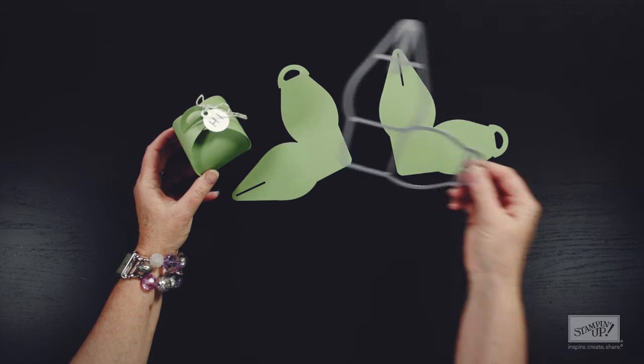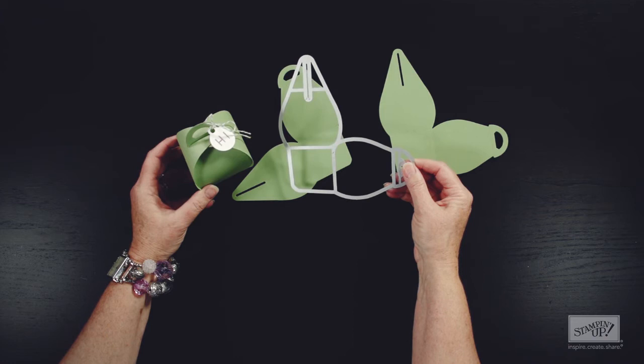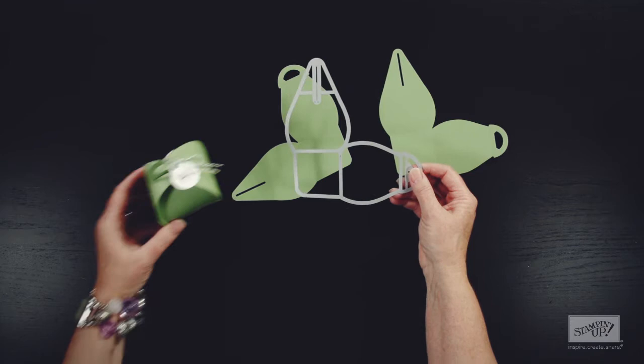They were cut out using the Curvy Keepsakes Box Thinlet Die, and at the same time that I cut the shapes out, the die also created the score lines so it's easy to fold it all together.